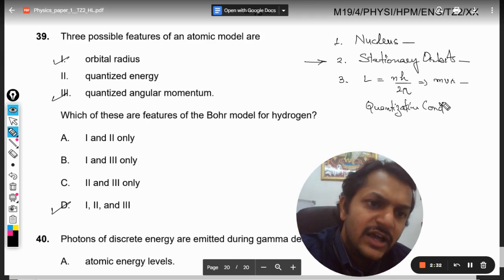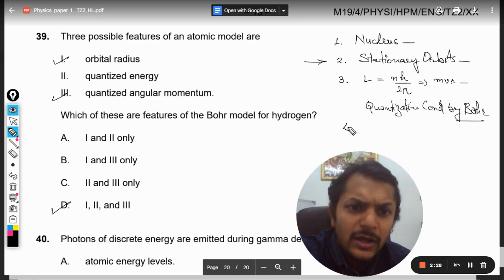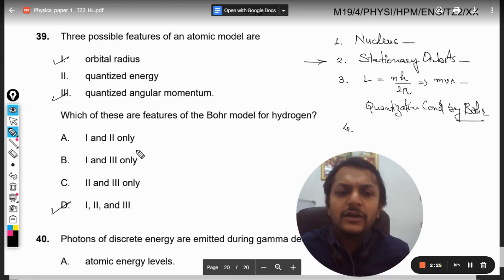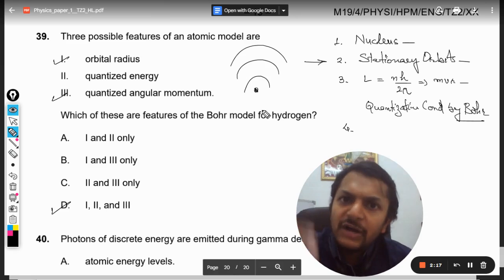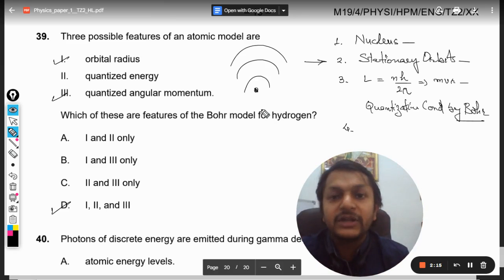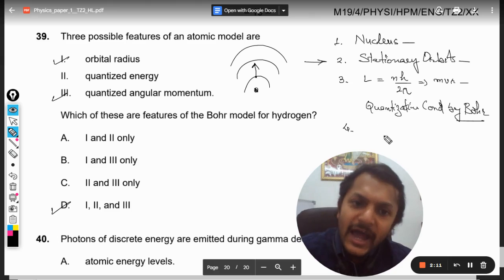Quantization condition as given by Bohr. So one and three is there. So what is happening in the fourth postulate? The fourth postulate is that, yes, now there is a nucleus, there are different orbits here. So can electron jump from one orbit to another orbit? Yes, it can.